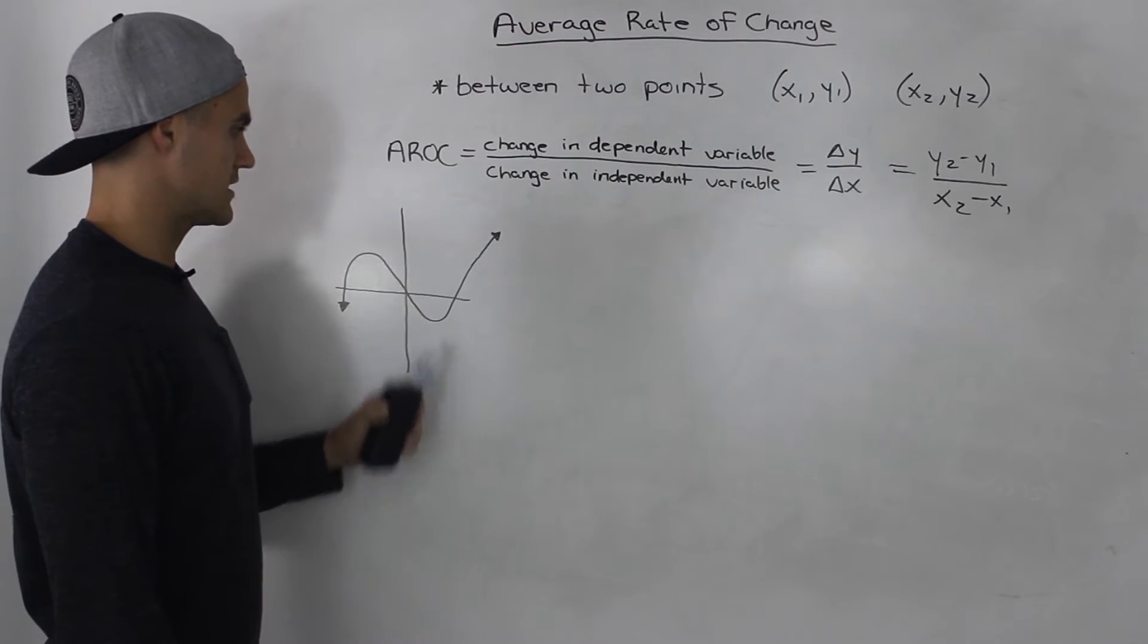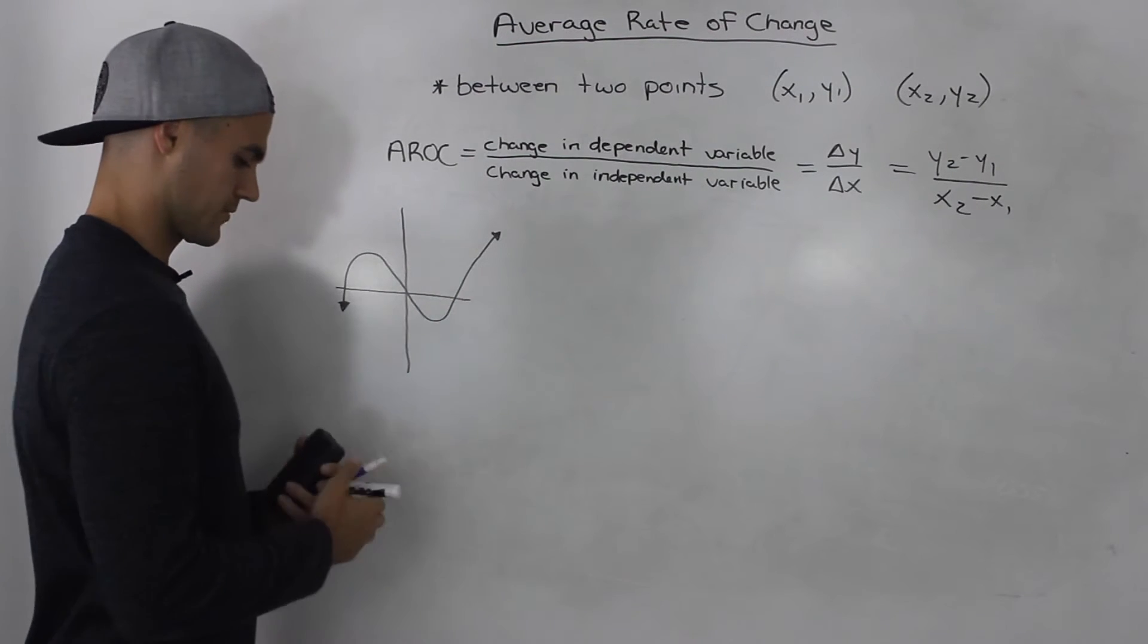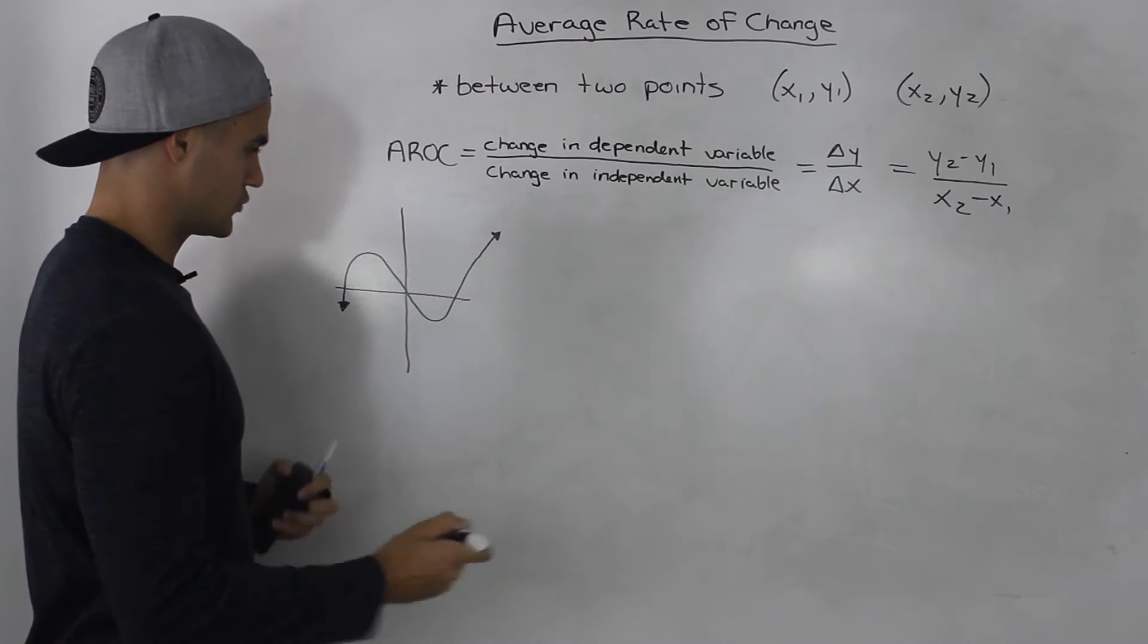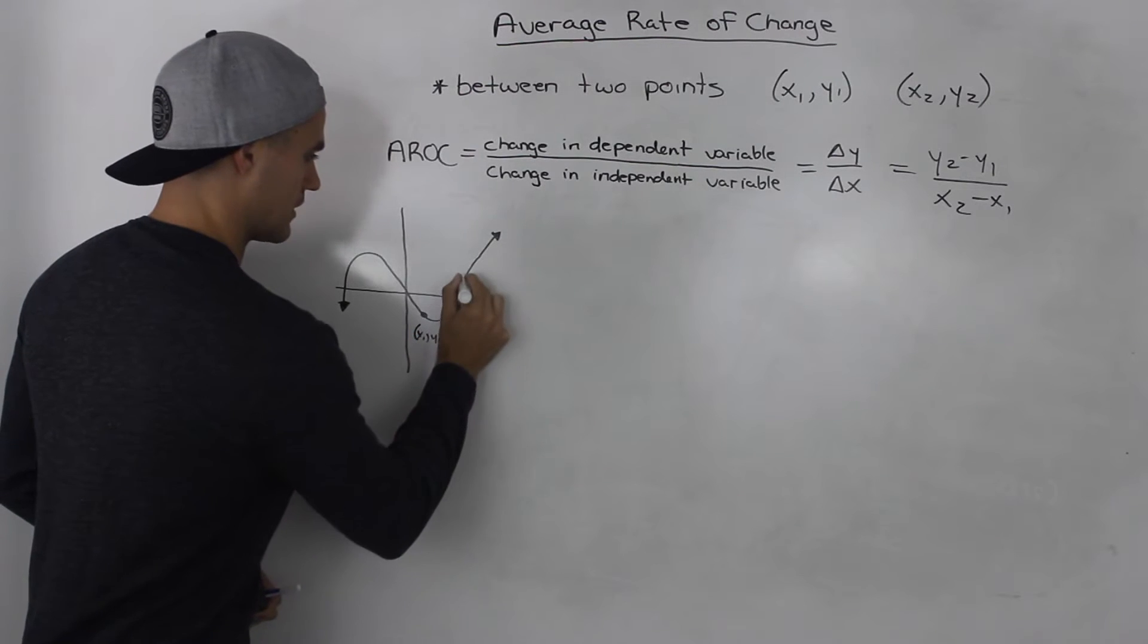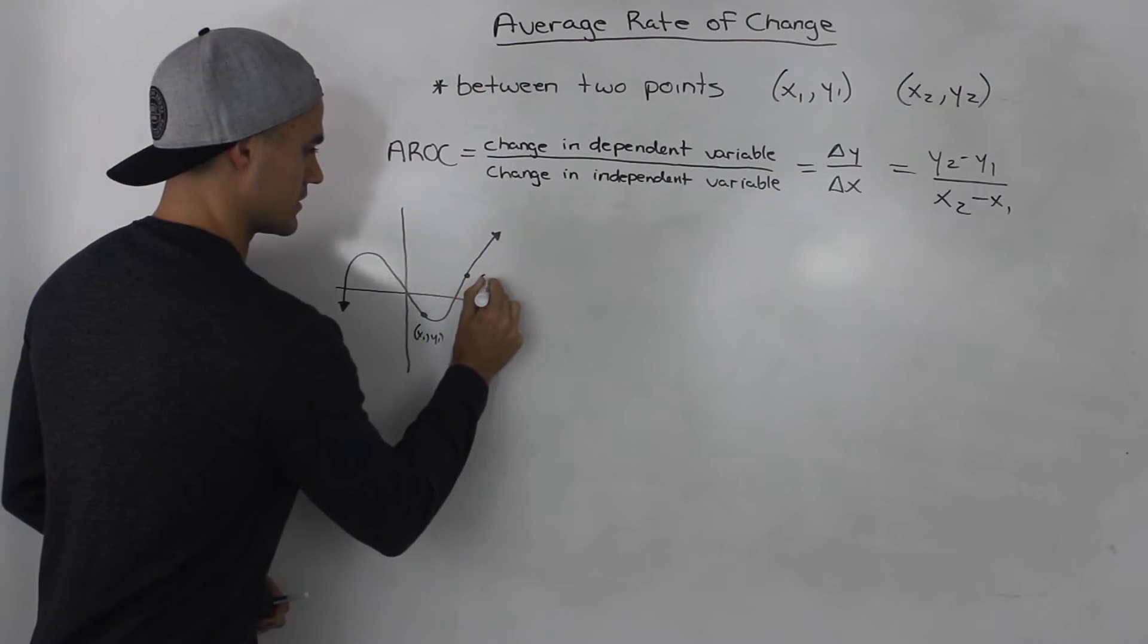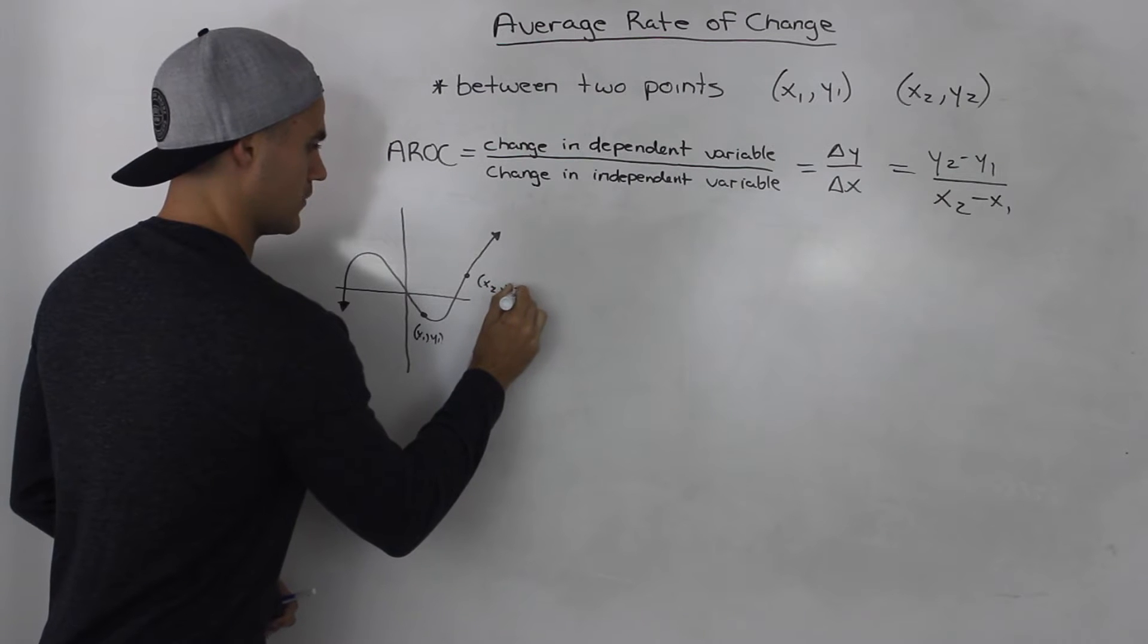For example, let's say we have this function here and we want to find the average rate of change between this point. Let's label that as (x1, y1) and then this point here as (x2, y2).